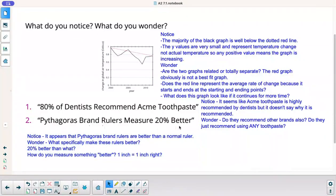All right. Pythagoras brand rulers measure 20% better. I noticed that at first glance with that statement, it appears that Pythagoras brand rulers are better than a normal ruler. I wonder what specifically makes these rulers better. I said 20% better than what? It doesn't say 20% better than, you know, what other brand or whatever. And then I put, how do you measure something better? Isn't one inch equal to one inch? So a lot of questions with these statements, but that's what a lot of products they try to do. And that's advertising for you. You try to spin it to make it look better. So our job in mathematics is to understand what is misleading and what is accurate statistical information.